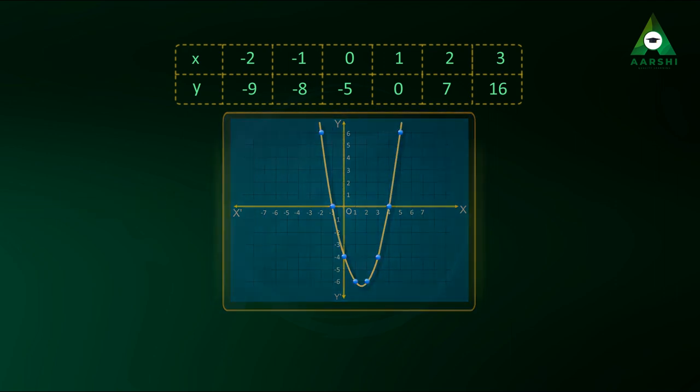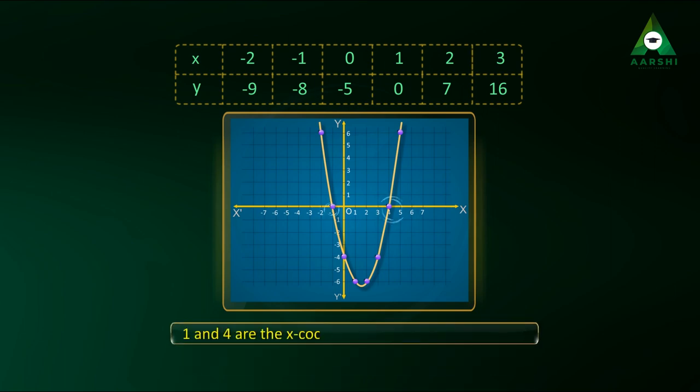From the table, we can observe that 1 is a zero of the quadratic polynomial. And from the graph, we can observe that 1 is the x coordinate of the point where the graph of y equals x square plus 4 x minus 5 intersects the x axis.